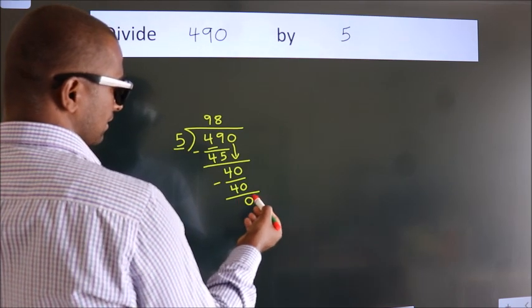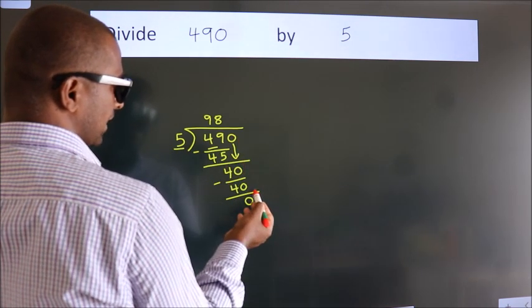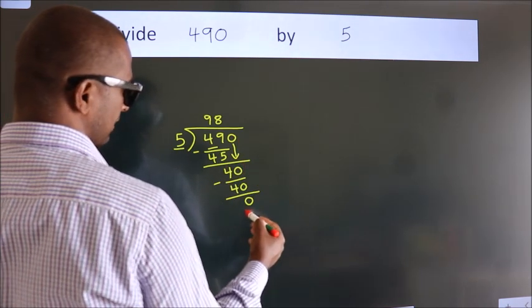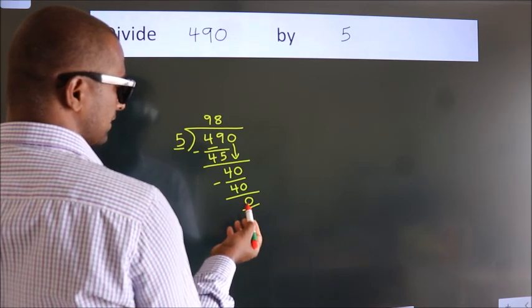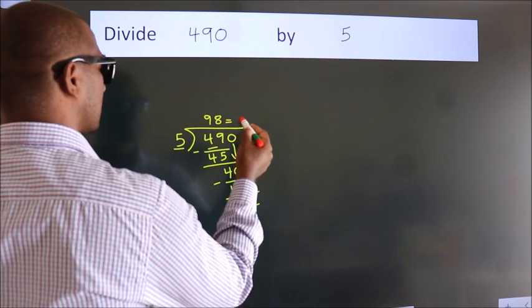After this, no more numbers to bring down. And we got remainder 0. So this is our quotient.